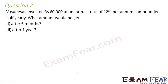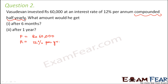Question number two. Vasudevan invested rupees 60,000 at an interest rate of 12% per annum compounded half yearly. What amount would he get after six months? The principal is rupees 60,000, the rate of interest is 12% per annum, and it is compounded half yearly, meaning the principal changes every half year. The time period after which we have to find the amount is six months.